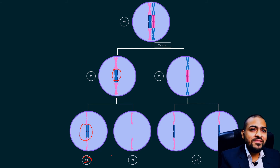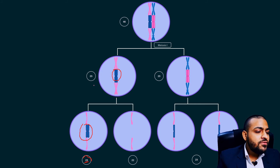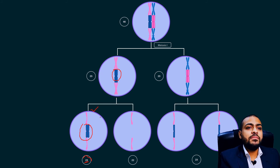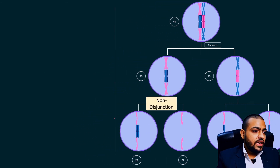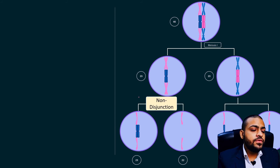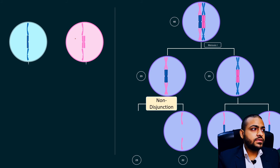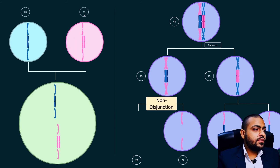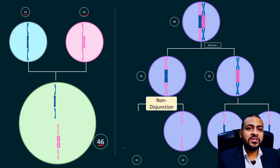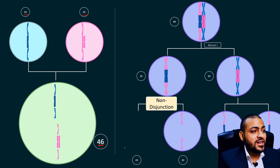Here is the real mystery: why is this gamete a problem if the number of chromosomes is normal? Why should we consider this gamete faulty when the chromosome number appears normal? Let's see what happens when this apparently normal but actually faulty gamete fuses with a perfectly normal gamete. Both are having 23 chromosomes, and when they fuse they form a zygote with 46 chromosomes — again it looks like a normal situation, but it is actually not.